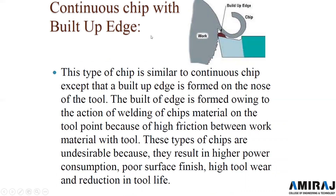In continuous chips there are cases where built-up edges (BUE) are formed on the tool side or chip side. This type of chip is similar to a continuous chip except that a built-up edge forms on the nose of the tool due to high friction between the work material and the tool, causing chip material to weld onto the tool point. BUE chips are undesirable because they result in high power consumption, poor surface finish, high tool wear, and reduced tool life.